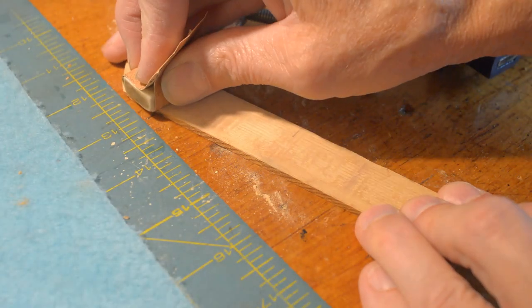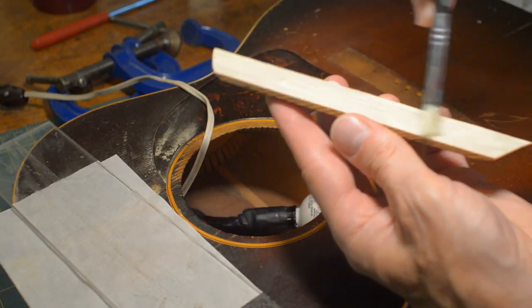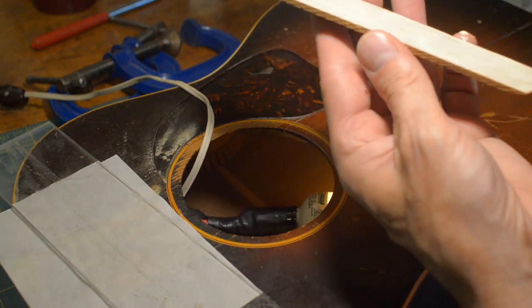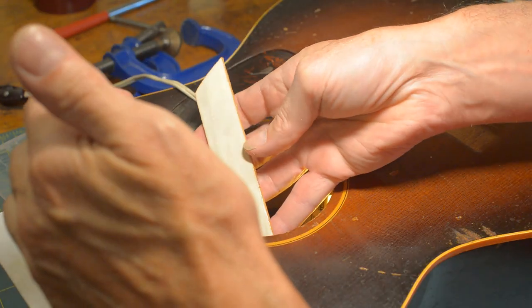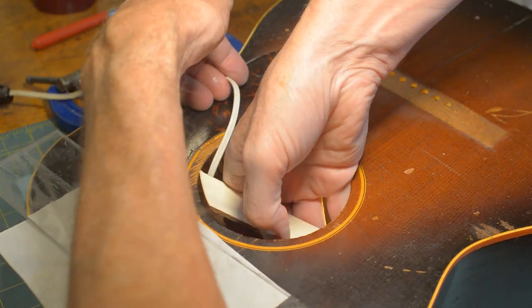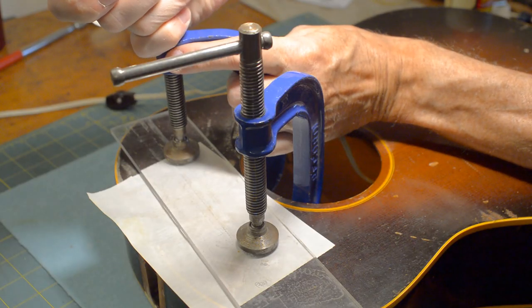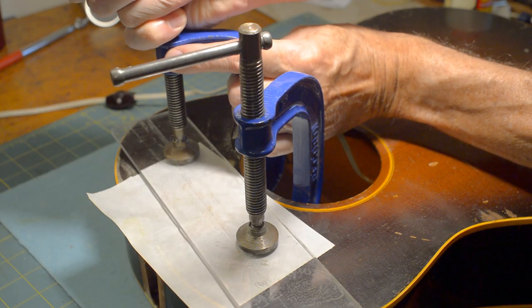Here I'm preparing the popsicle brace which goes underneath the fingerboard extension. Adding the glue, putting it in place, and then adding the clamps.